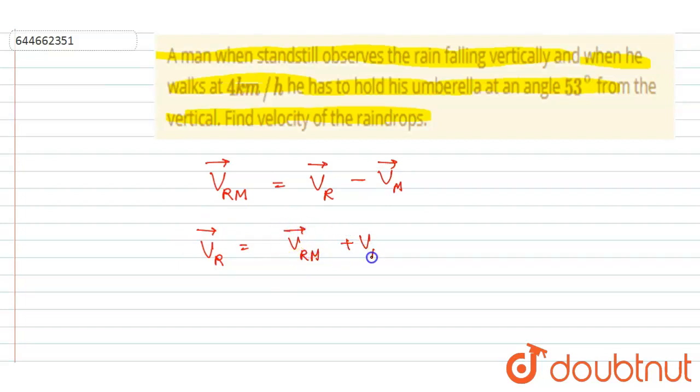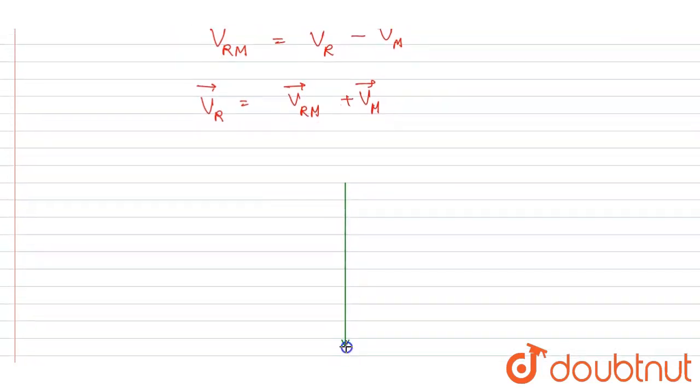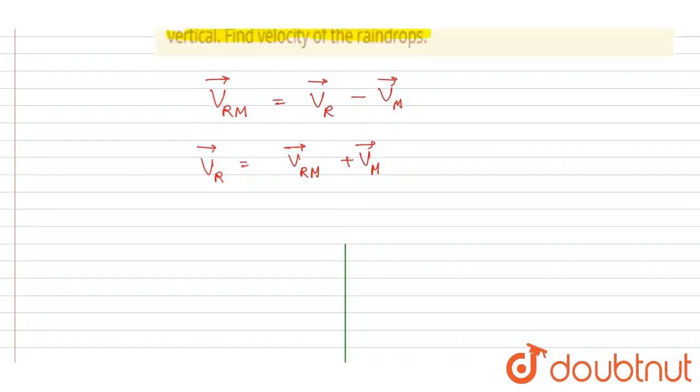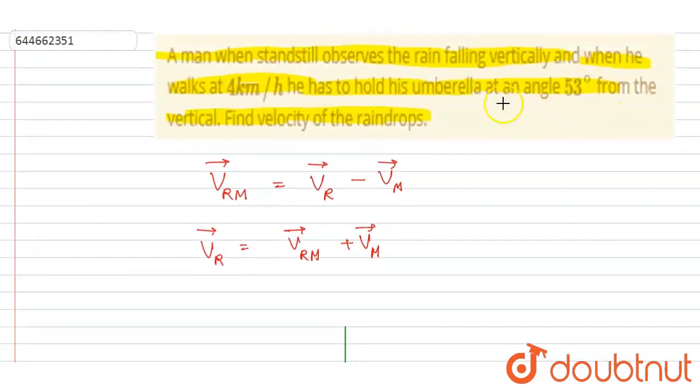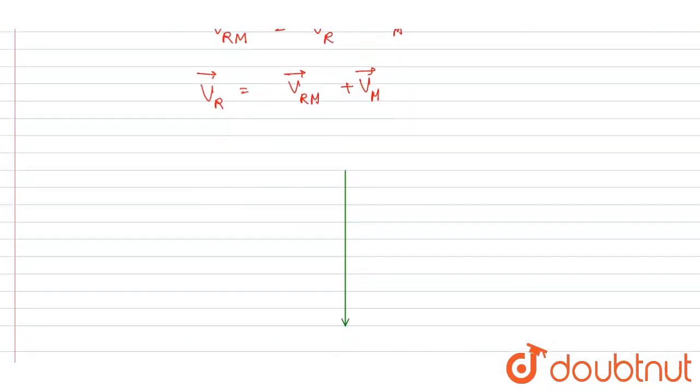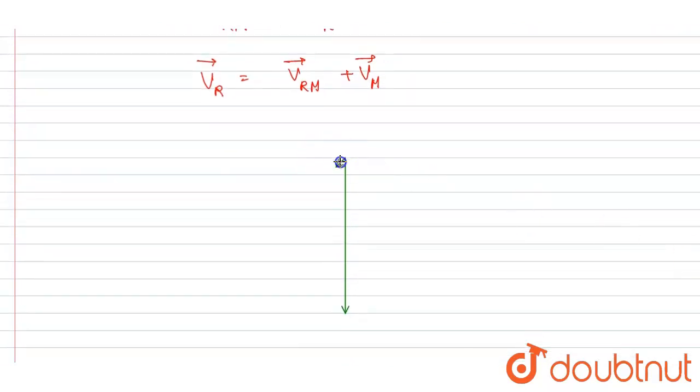If you see here, it is given that the actual velocity of the rain is vertically downward, and it appears to fall at an angle of 53 degrees. If he is holding his umbrella 53 degrees from the vertical, so the rain must also be falling with the same angle.